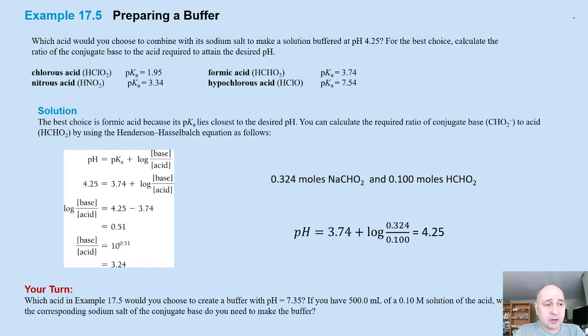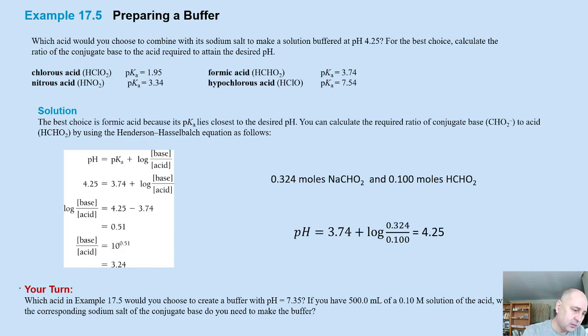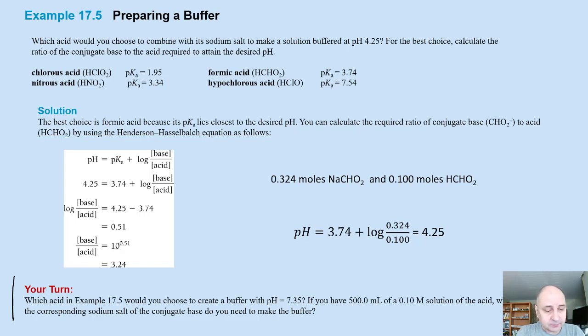That's how you would prepare a buffer that has a pH of 4.25. Not much to say about this slide — it's basically just the solution for your record, so you can look at that on the slides. But you do want to look at this problem here, as it's probably going to be on the exam.